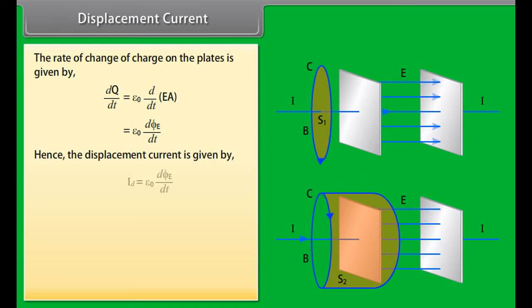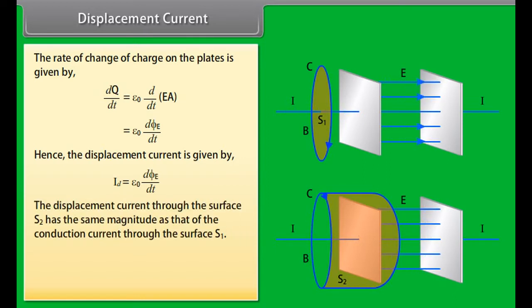It means there is an inconsistency. There must be a current associated with the changing electric field in the non-conductor between the capacitor plates. The rate of change of charge on the plates is given by epsilon not D upon DT of EA, which is equal to epsilon not D phi E by DT. Hence the displacement current is given by Id is equal to epsilon not D phi E by DT.